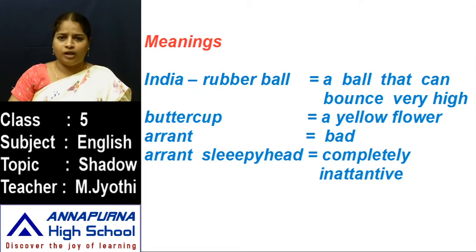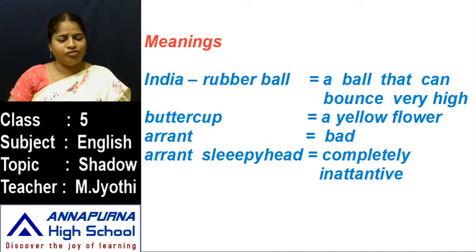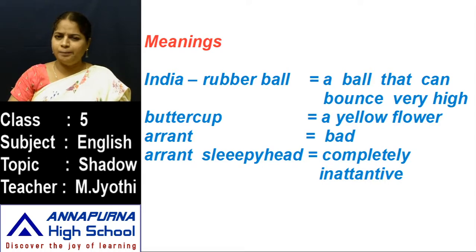Once again I am reading, children. India rubber ball — a ball that can bounce very high. Buttercup — a yellow flower. Buttercup means a yellow flower. Aren't — bad. Aren't means bad. Aren't sleepy head — completely inattentive.